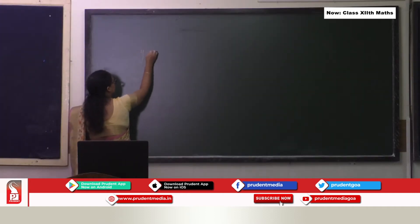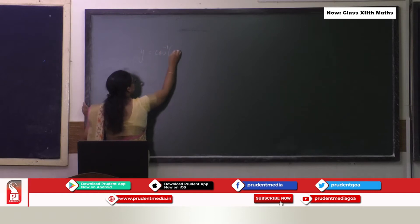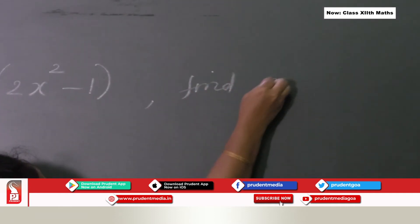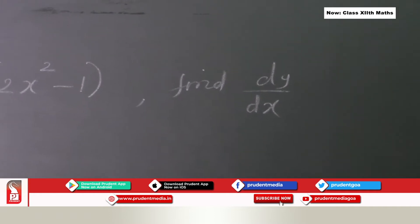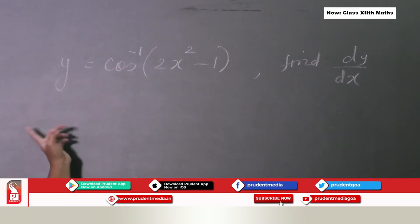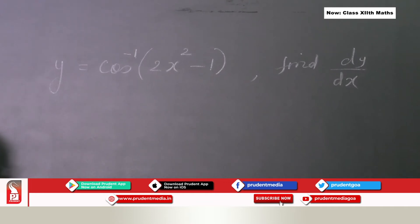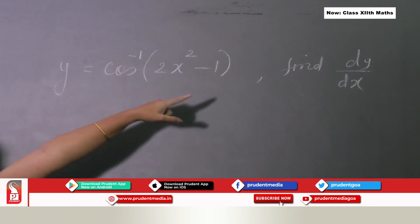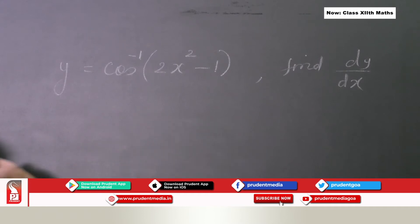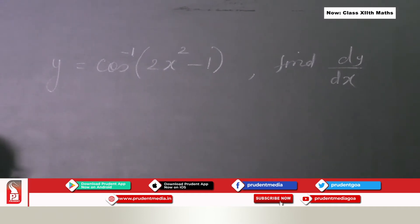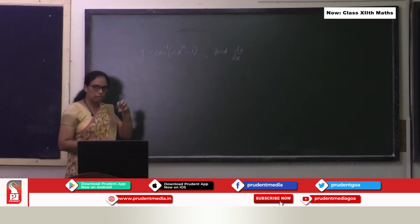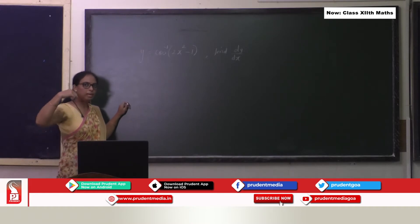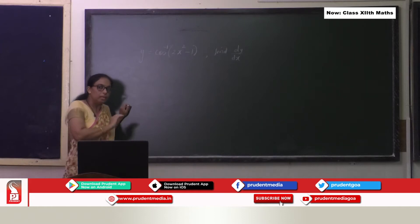For example: y equal to cos inverse of (2x² − 1), find dy/dx. When I see this, I know I'm differentiating an inverse trigonometric function. But rather than applying the standard differentiation formula directly, there is a simpler method using trigonometric identities.